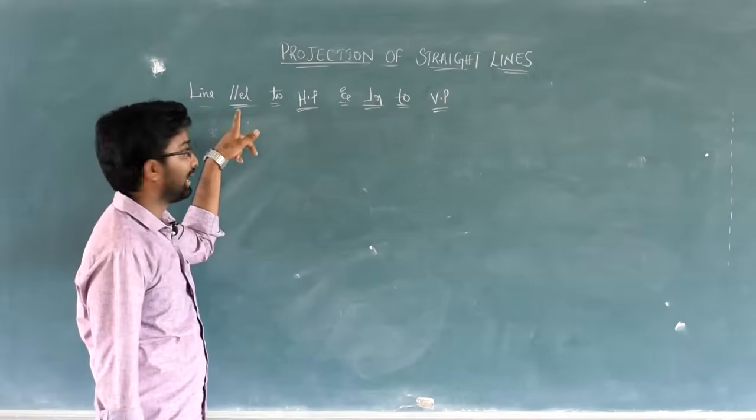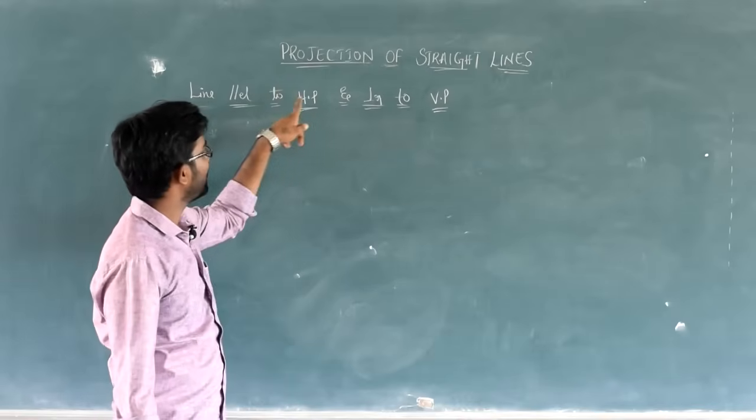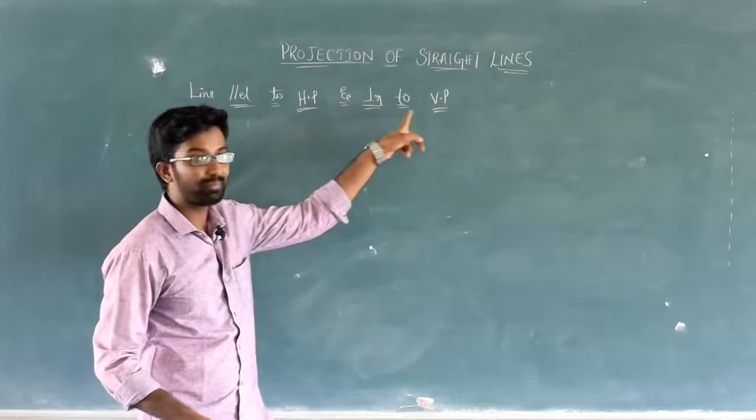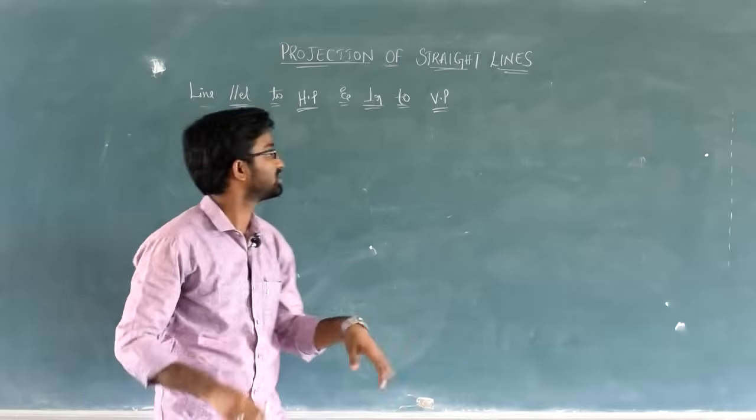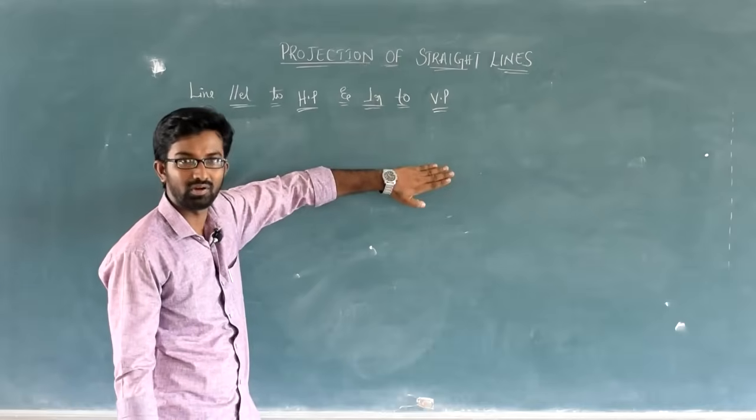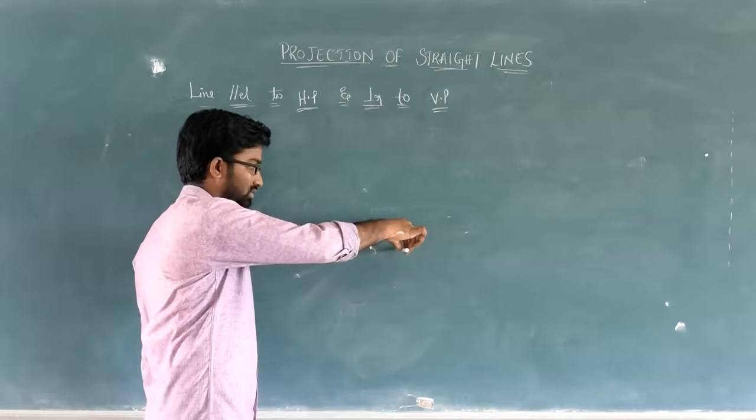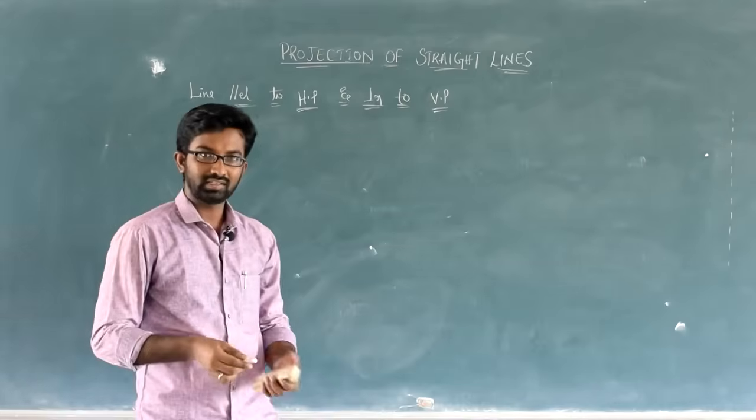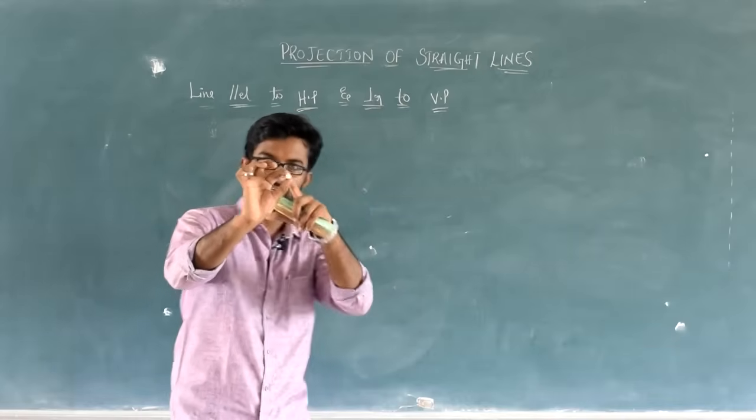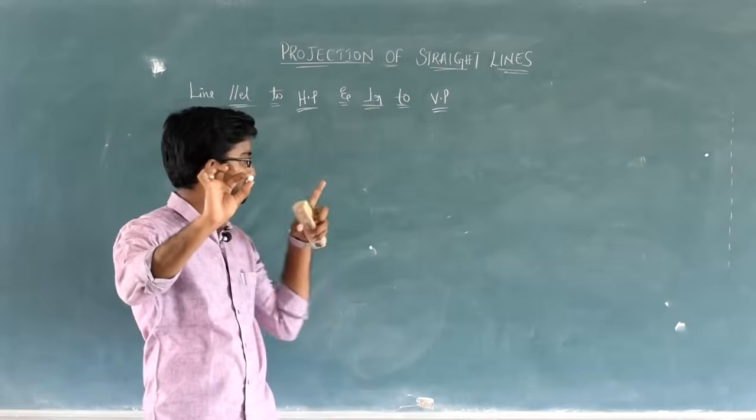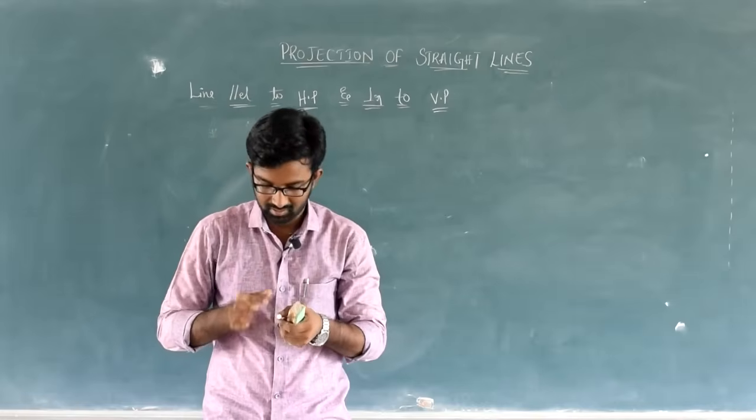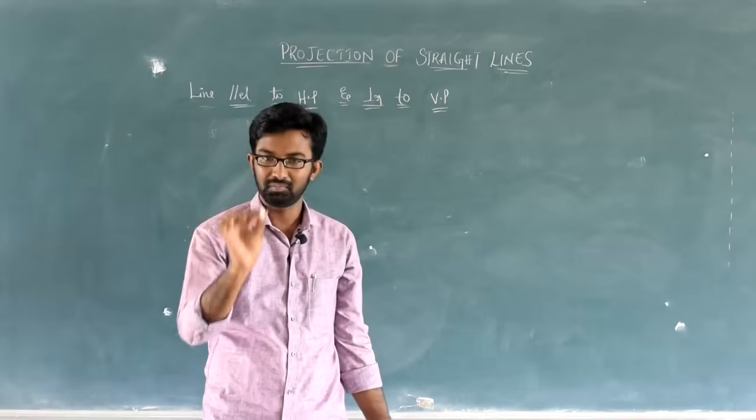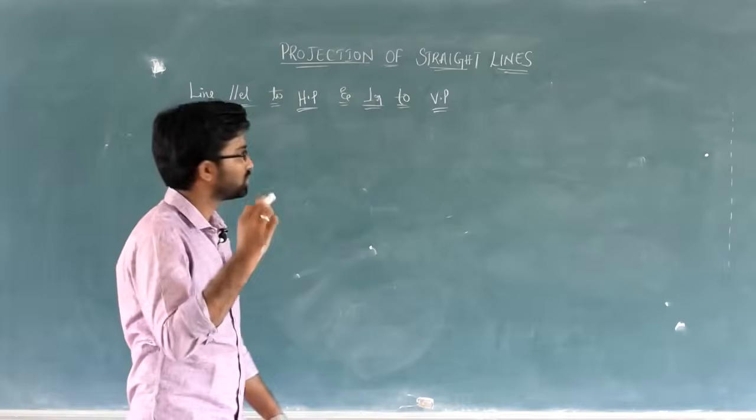So, this is our next concept. What did we see? Line parallel to VP and perpendicular to HP. Now let's see line parallel to HP and perpendicular to VP. This is the third position. First position parallel to both planes. Second position perpendicular to HP - it pierces through HP. And now third position perpendicular to VP - it should be perpendicular to vertical plane, piercing through it. This is the position.